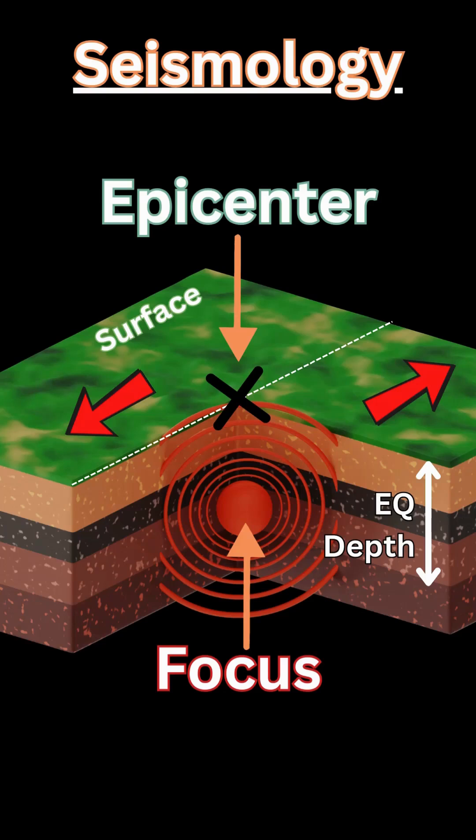The first is the focus. The focus is the term relating to where the actual earthquake takes place at a certain depth under the surface within the fault line, whether a dip slip or a strike slip. That is the location where the seismic waves are released.